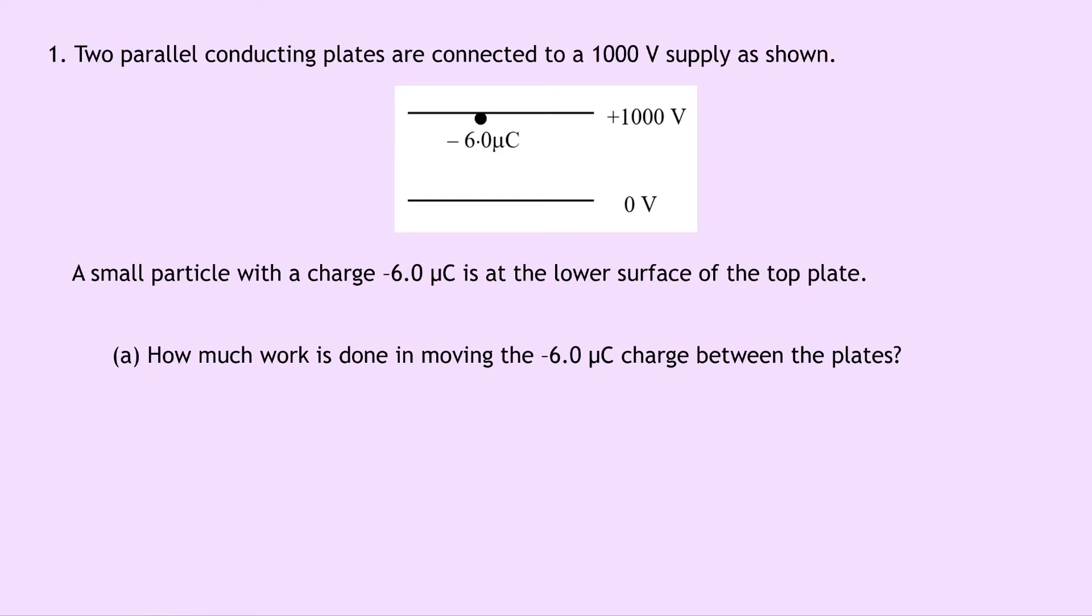Remember this stuff was seen in higher level in the particles and waves topic, so it should pretty much be a recap here. Writing down what we know from the question, we're trying to find the work done. We know that the charge Q is minus 6 microcoulombs, which is the same as minus 6 times 10 to the minus 6 coulombs, and the potential difference or voltage V between the plates is 1000V.